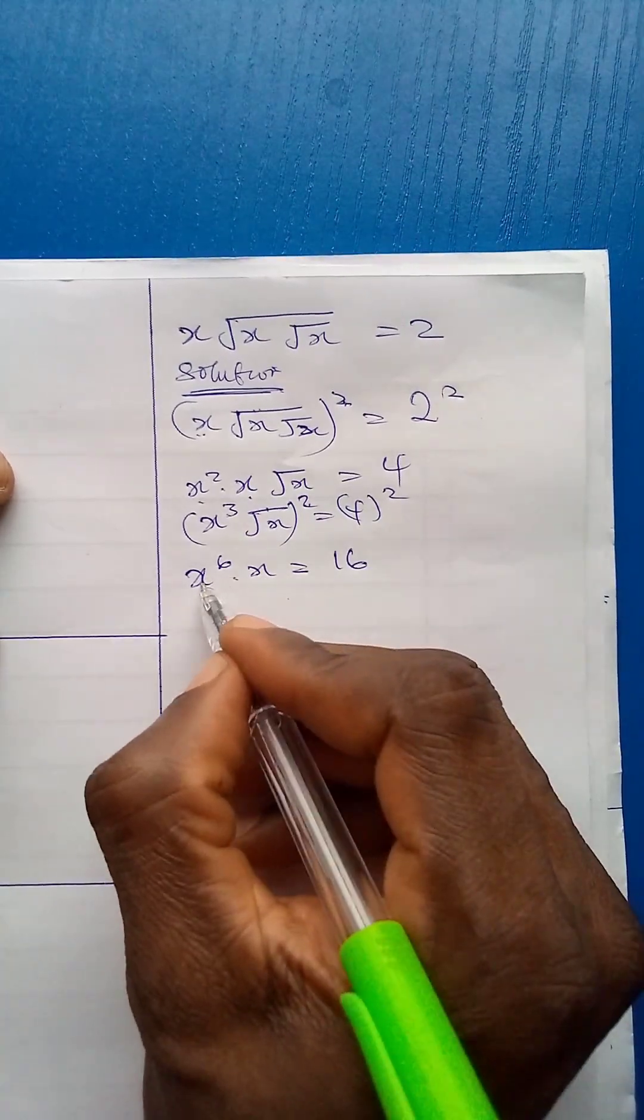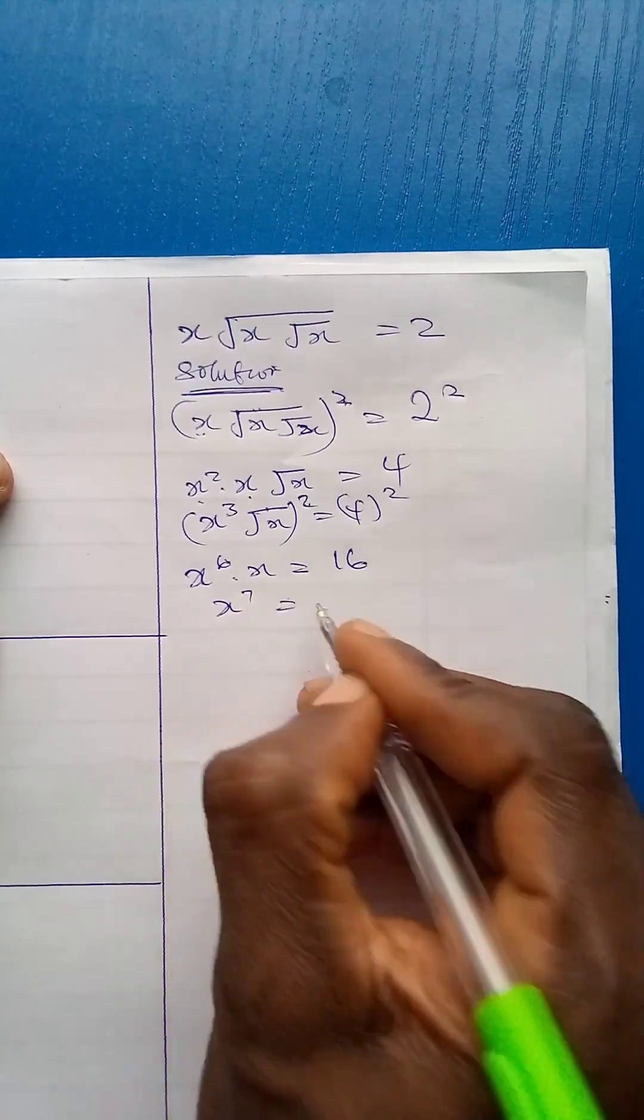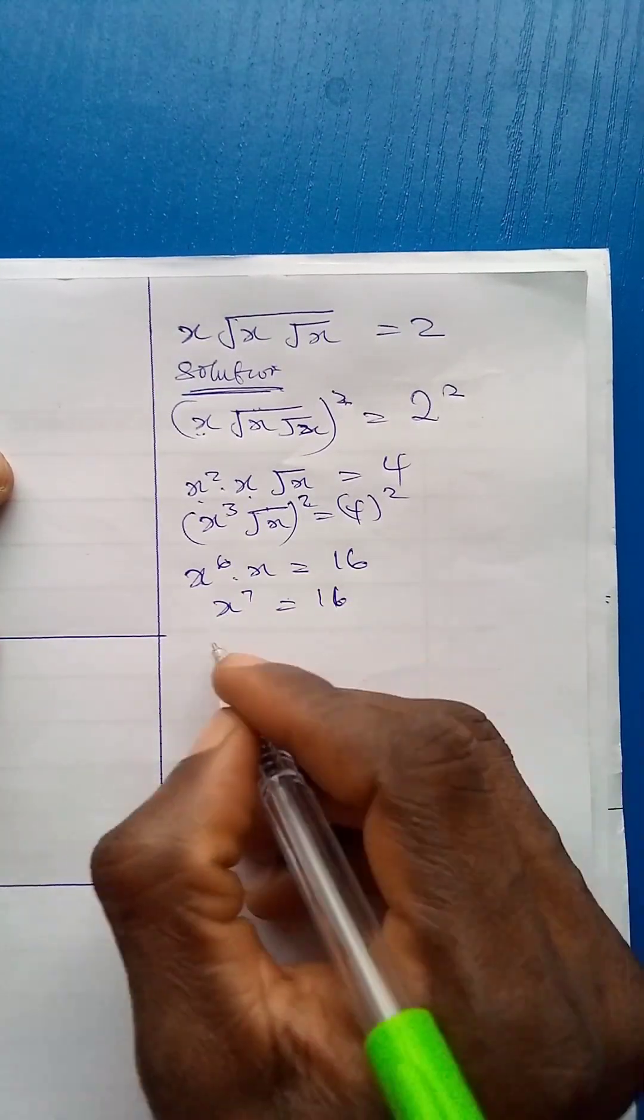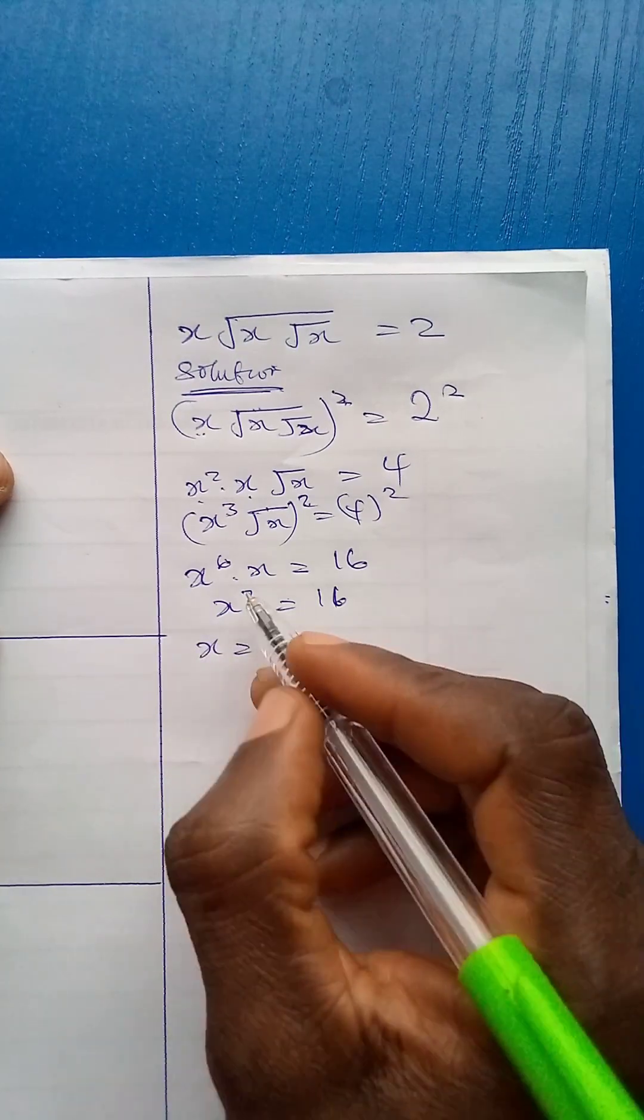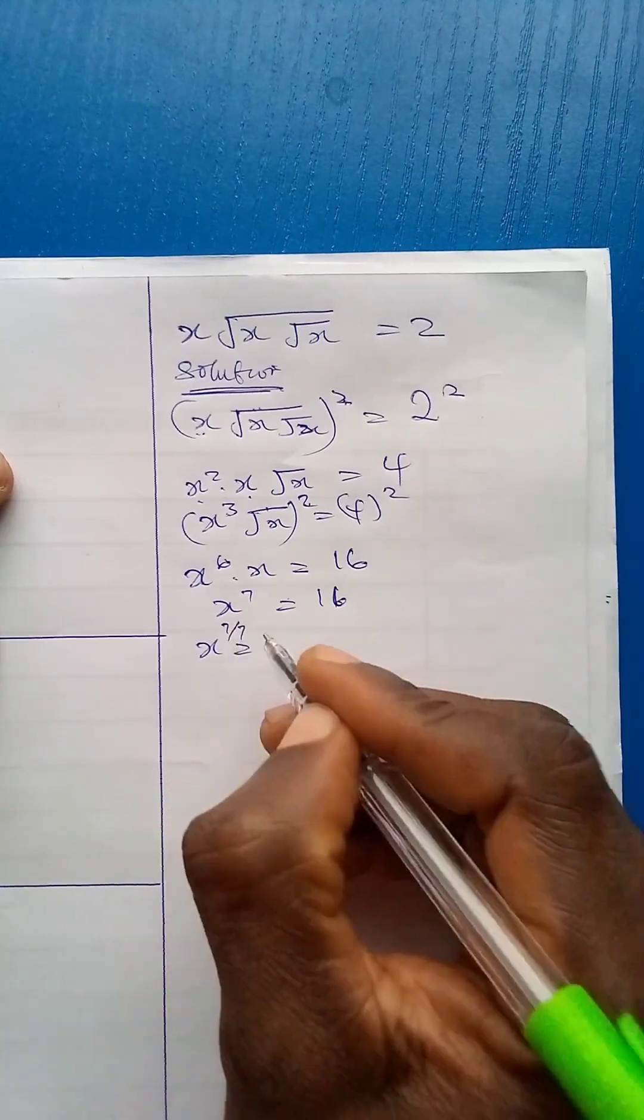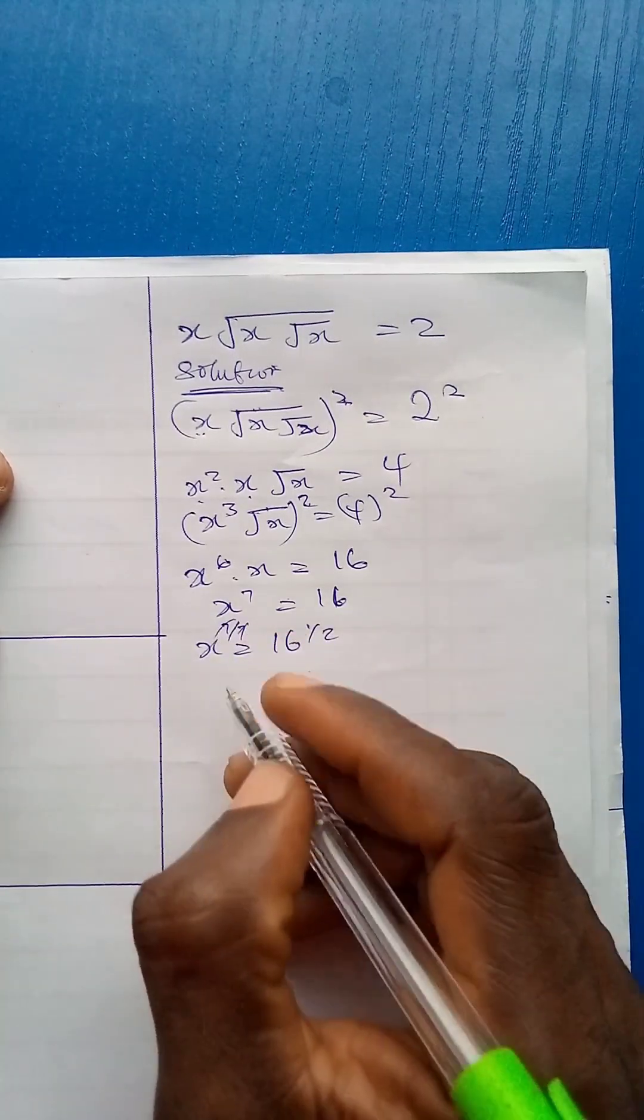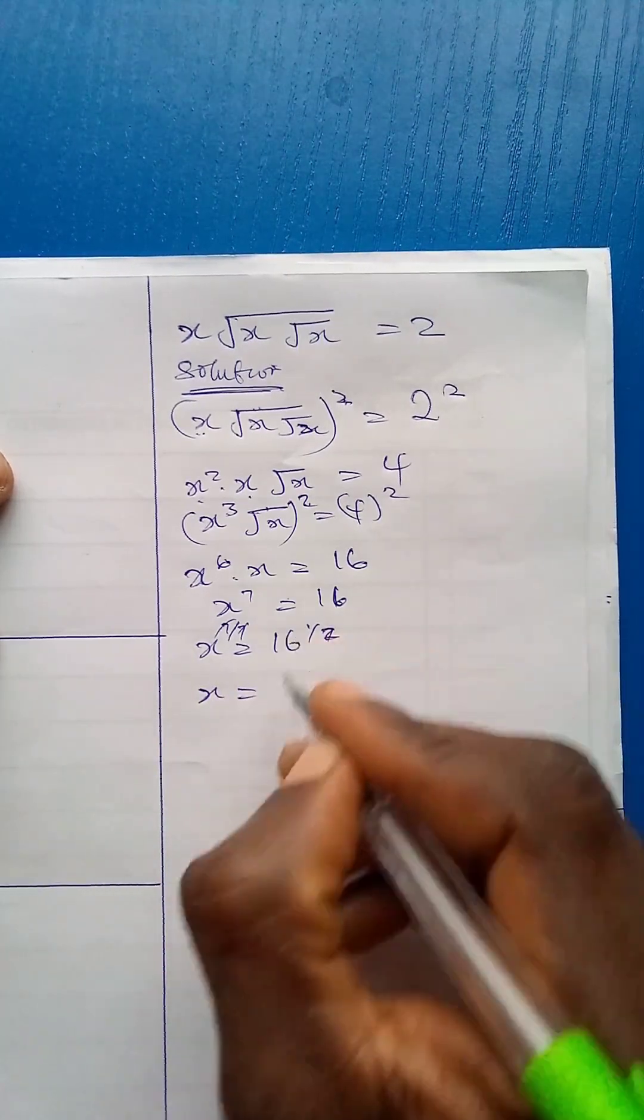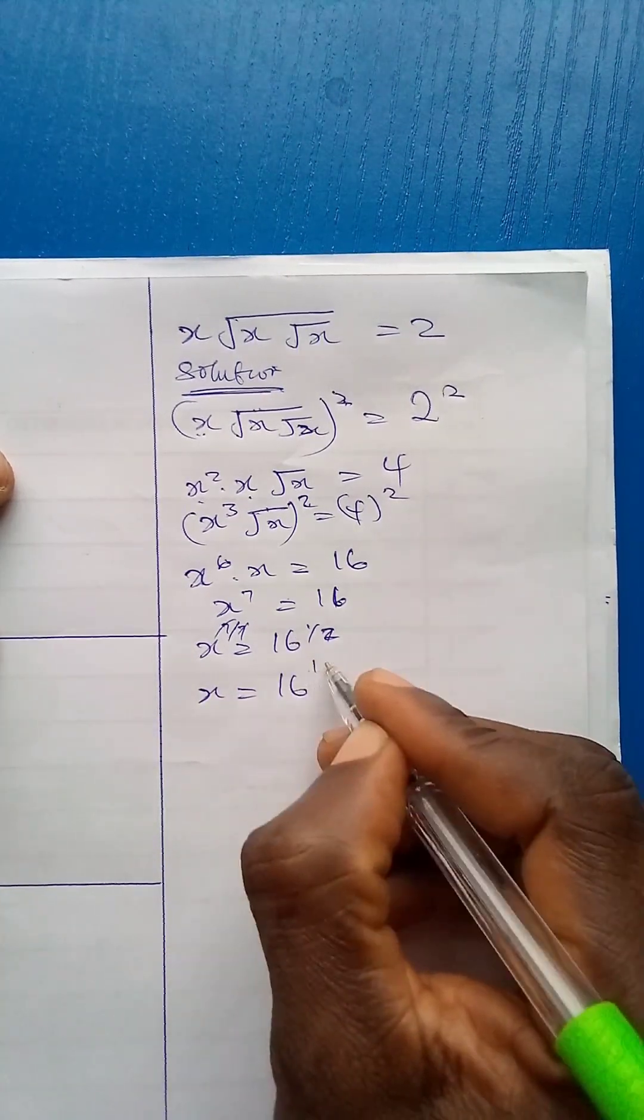Now, x raised to power 6 times x will give me x to power 7. So x to power 7 is equal to 16. And to find the value of x, x will now be, if I divide the powers by 1 over 7, and then 1 over 7, this and this will cancel out, remaining x. Therefore, x equals to 16 raised to power 1 over 7.